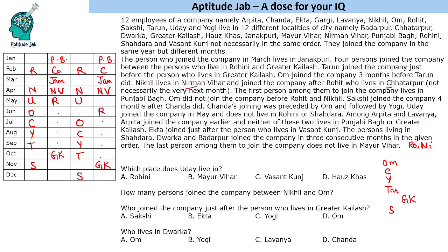Almost all people are filled — just three more remaining. Among Arpita and Lavanya, Arpita joined the company earlier, and neither of these two lives in Punjabi Bagh or Greater Kailash. So in this case Arpita comes before Lavanya, and they are placed such that neither occupies Punjabi Bagh or Greater Kailash.